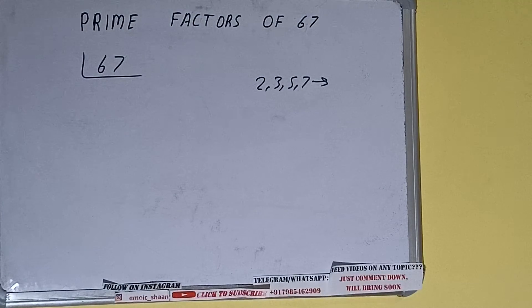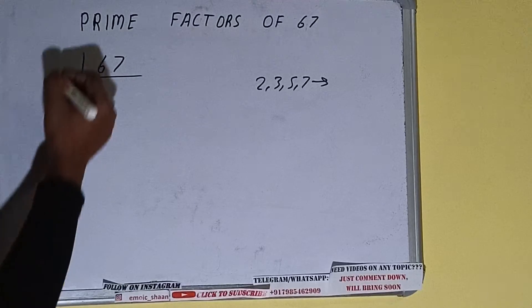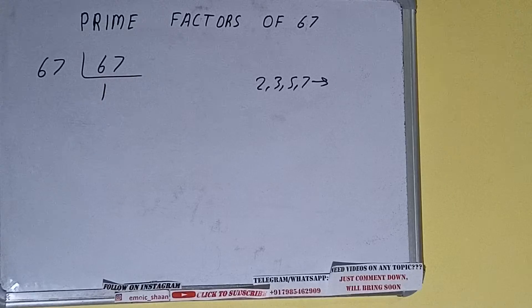Alright. So if we talk about the number 67, the number 67 is also a prime number. So it is only divisible by itself, that is 67, and once we do so we'll be getting 1.